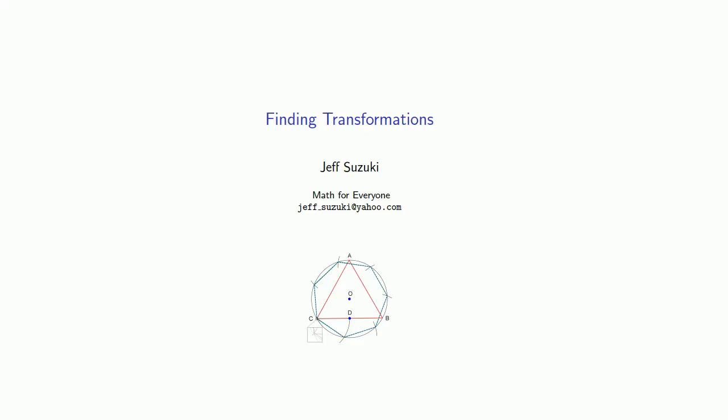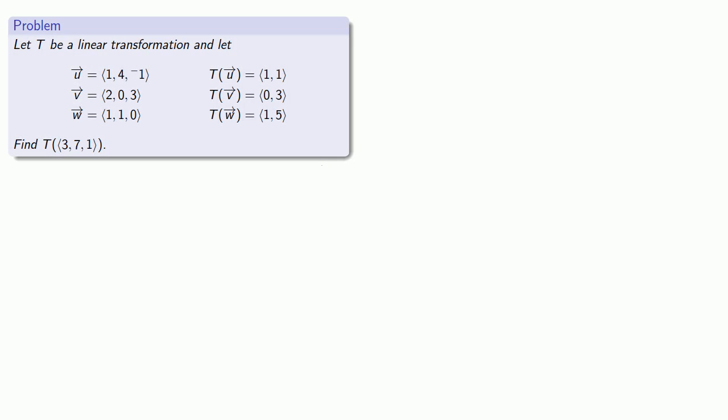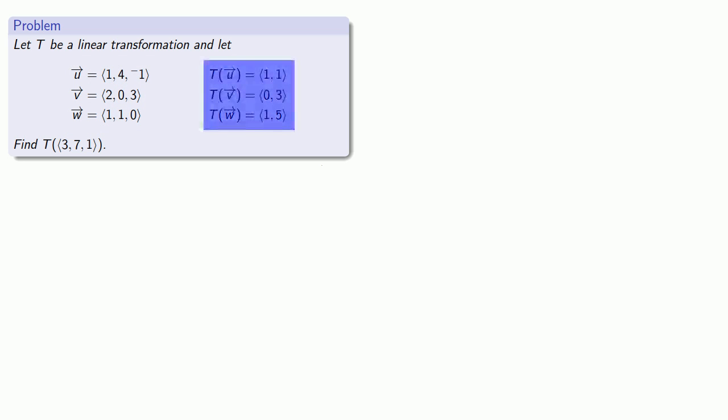One of the reasons that linear transformations are so useful is that once we know what our transformation does to a couple of vectors, we know what our transformation does to many vectors. Of course, this knowledge comes at a price — fortunately, the price is pretty cheap. The price is we have to solve some equations. So let's take a look at an example. Suppose I have a linear transformation and a couple of vectors, and I know what the linear transformation does to those vectors. Given this information, I can try and find what the linear transformation does to some arbitrary vector.